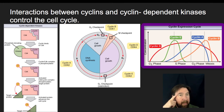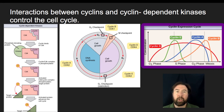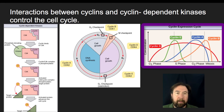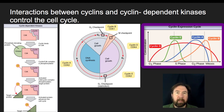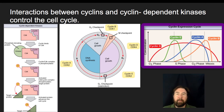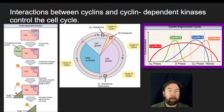Certain cyclins rise or fall during different phases, and these signal whether the cell should proceed to the next checkpoint. There are a lot of different regulation pieces — you must have the cyclins, you must have the CDKs, and you also have to have the target proteins. So the cell doesn't just barrel through the cell cycle step to step; there have to be a series of coordinated chemical signals in order to send it to the next step in the cell cycle.